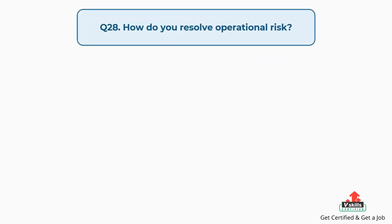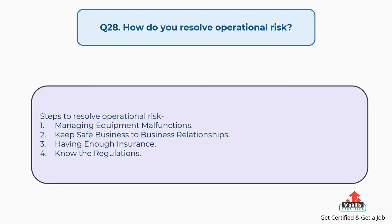Question number twenty-eight: how do you resolve operational risk? Steps to resolve operational risk: Step 1, managing equipment malfunctions; Step 2, keep safe business-to-business relationships; Step 3, having enough insurance; Step 4, know the regulations.